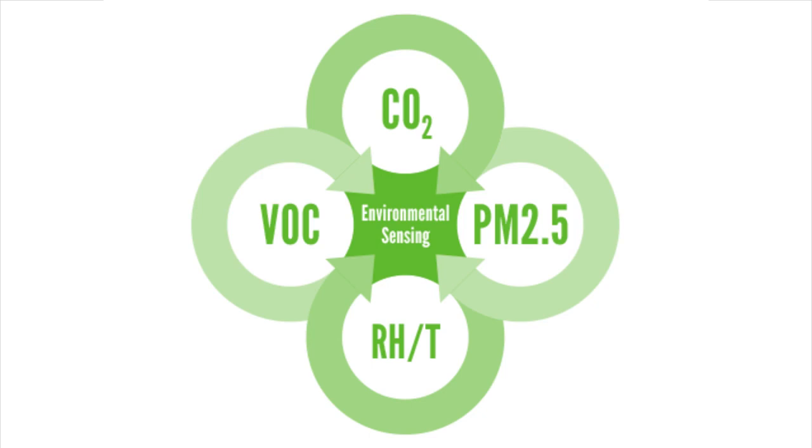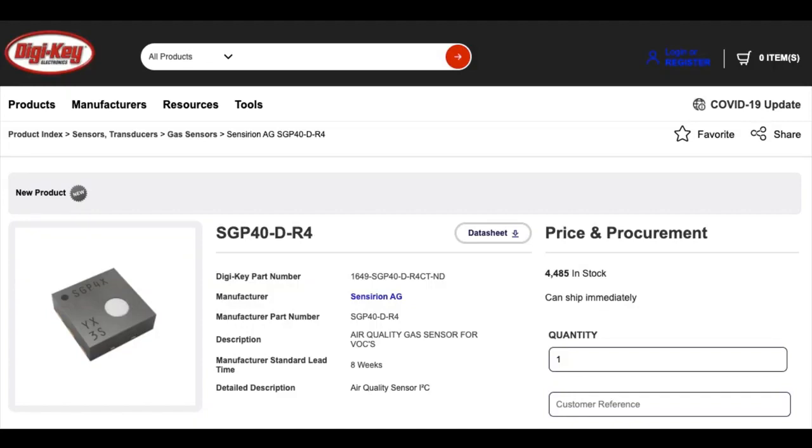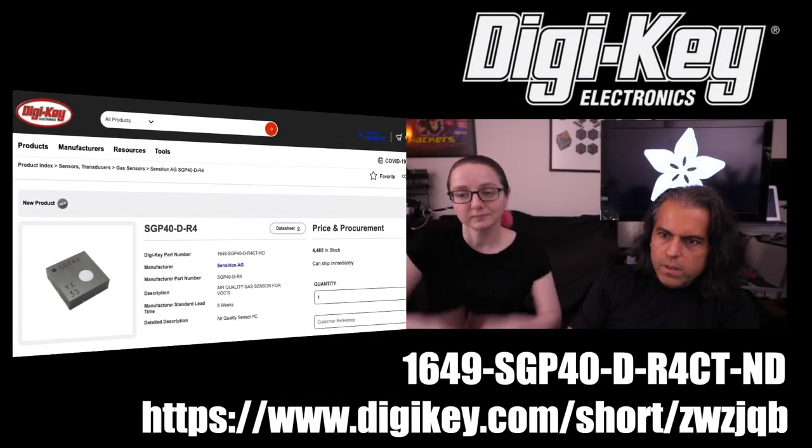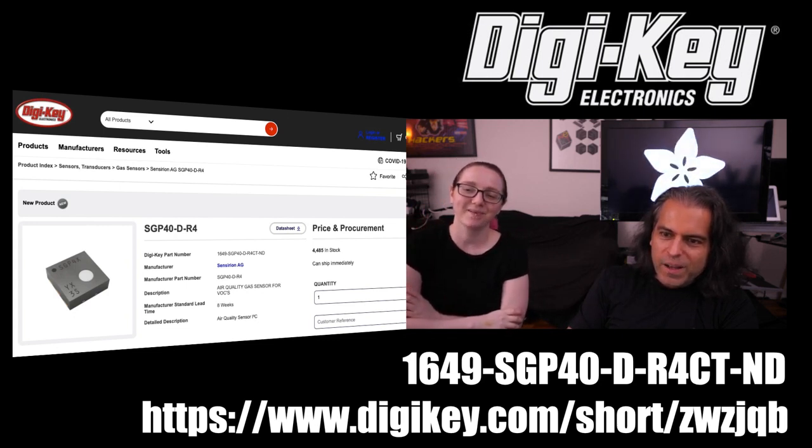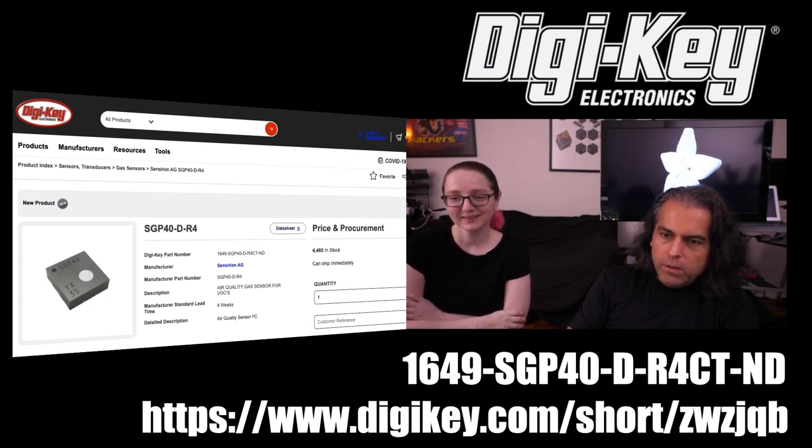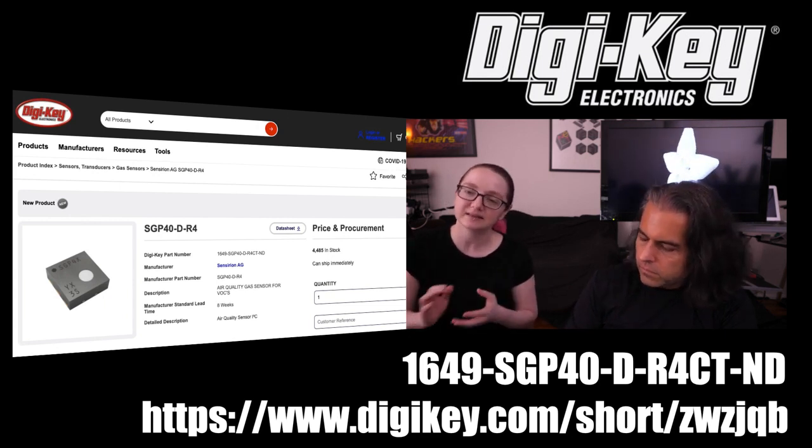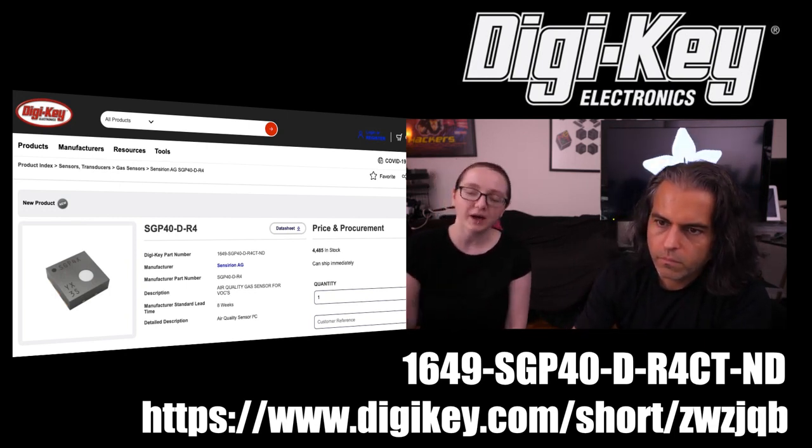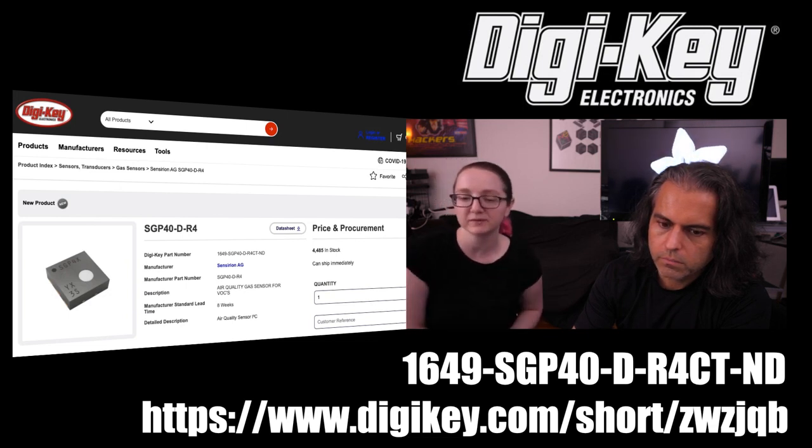So you can pick this up. It's available, of course, on Digi-Key, and we have the number 1649-SGP40-DR-4CT-ND. Well, that just means cut tape. That's my eye exam of the week. And digikey.com/short/ZWZJQB, and you can, of course, just search for it on the site. SGP40 on Digi-Key. And check out the SGP30. So they're not exactly the same. They're a little bit different. But they're both air quality sensors. And I think this one, when you add their library, I think it'll be able to give you more information. But you have to do that microcontroller-based processing.